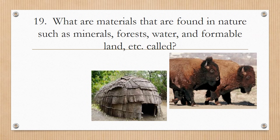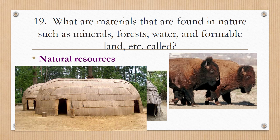Number nineteen: what are materials found in nature — such as minerals, forests, water, and farmable land — called? Natural resources. The buffalo was a natural resource for the Lakota Sioux. The bark creating the Iroquois longhouse is a natural resource from trees. Another longhouse is made out of mats woven together from river reeds, because that tribe lived along a riverbank where river reeds were the available natural resource.